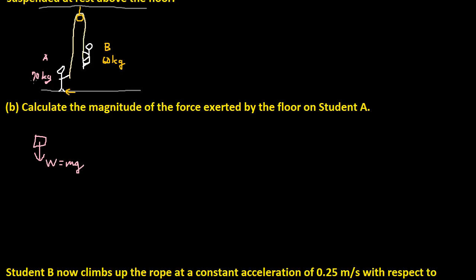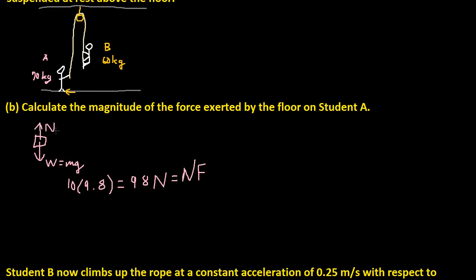The mass of Student A is 70 kg, but don't forget Student B has a mass of 60 kg. Student B is pulling on Student A with 60 kg of mass, so Student A would experience 60 kg less mass — effectively 10 kg. So weight is 10 × 9.8 = 98 newtons. And normal force equals weight because they're stationary, so normal force is 98 newtons. That's the answer for Part B.